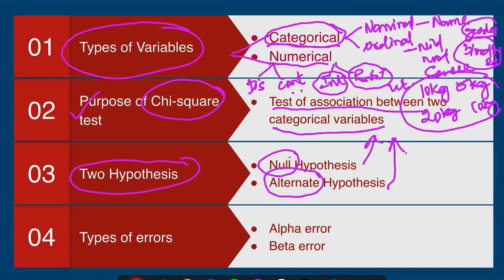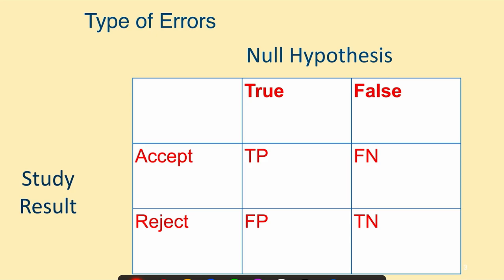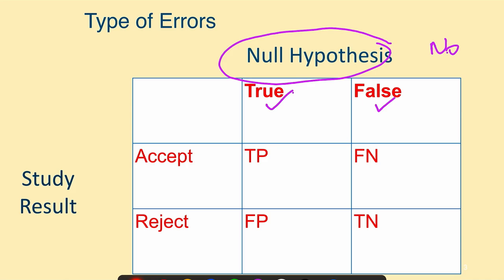The fourth point is the types of errors. We have two types of errors in research: alpha error and beta error. In research, we have the null hypothesis which says there is no relationship. In reality, this may be either true or false — there are two possibilities.